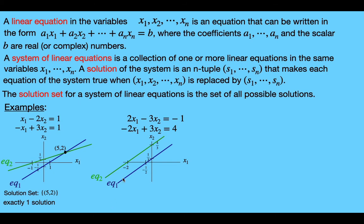Since they're parallel, they're never going to intersect. Any solution of the first equation must lie on the first line, and any solution of the second equation must lie on the second line, which means there is no common solution for both equations. So the solution set is the empty set — there is no solution for this system of linear equations.